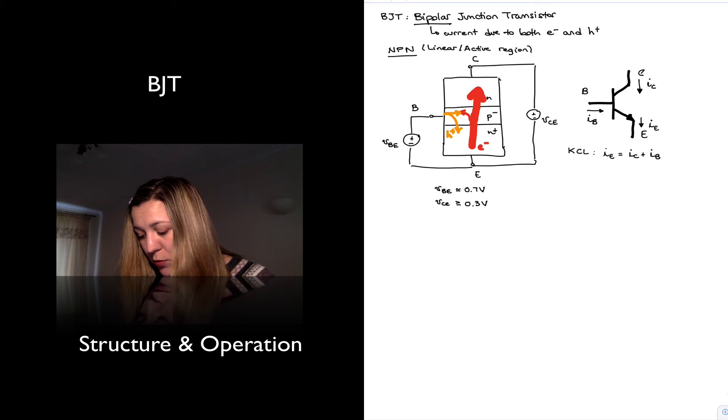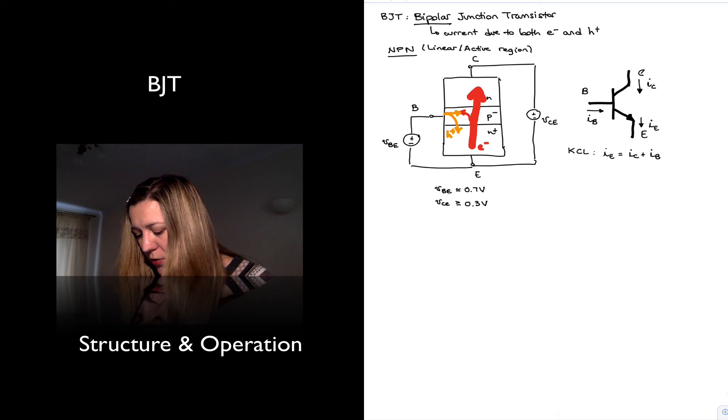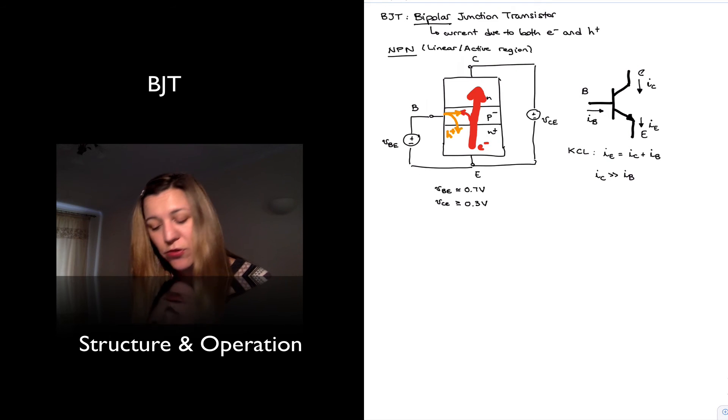Now, normally we will have that, as we have seen, the base current is very small compared to the collector or emitter currents. There are very few recombinations at the base. And so we will have that IC is much greater than IB. And because of that, we can actually make the approximation of the collector current approximately equal to the emitter current. They're not exactly equal.